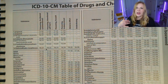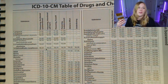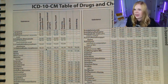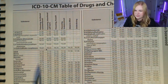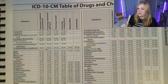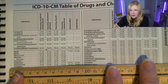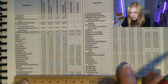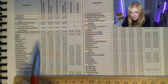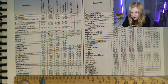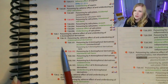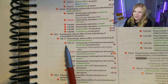Let's do a couple of examples. Say a patient has accidentally poisoned themselves with acetaminophen — maybe they thought it was a different medication or a breath mint and accidentally took too much. We're going to go down alphabetically to acetaminophen and find the first column for accidental poisoning, unintentional. The code is T39.1X1. Now, as the guidelines state, we can't code directly from the Table of Drugs and Chemicals — we have to check this in our tabular list. When we look it up, we see we need a seventh character.